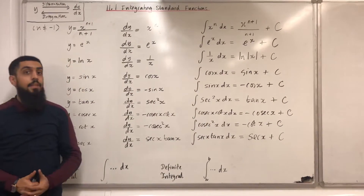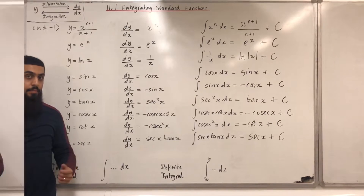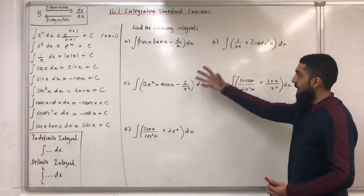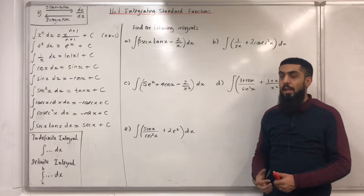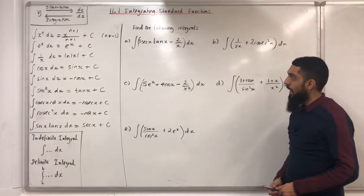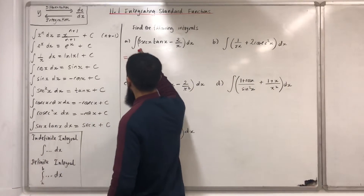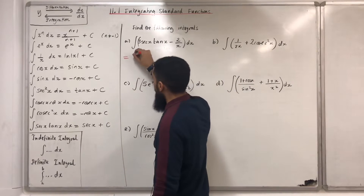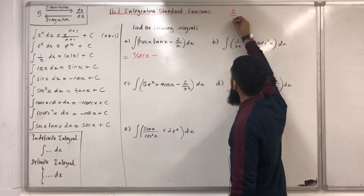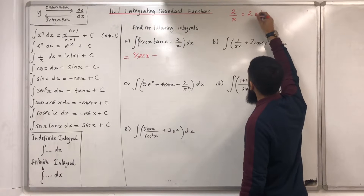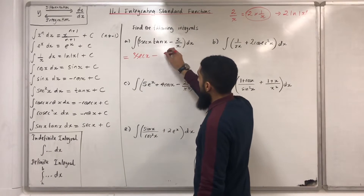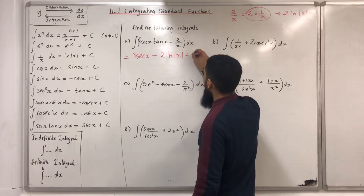These are the integrals of standard functions which you need to memorize for the exam. We are going to use these integrals to find the following integrals a, b, c, d, and e. Part a: integral of 3 sec x tan x minus 2/x dx. Integrating the first term gives 3 sec x. Minus 2/x is the same as 2 multiplied by 1/x, which integrates to 2 ln|x|. So the answer is 3 sec x minus 2 ln|x| plus c.